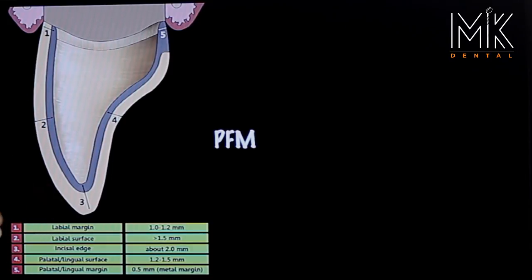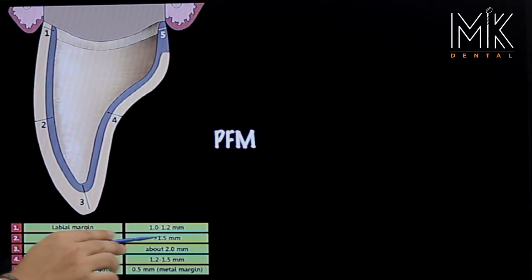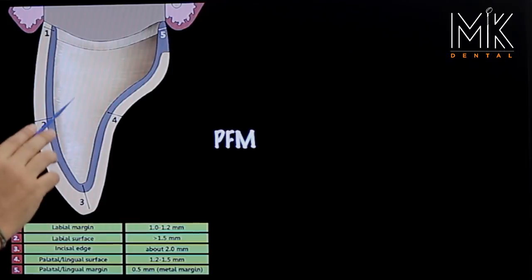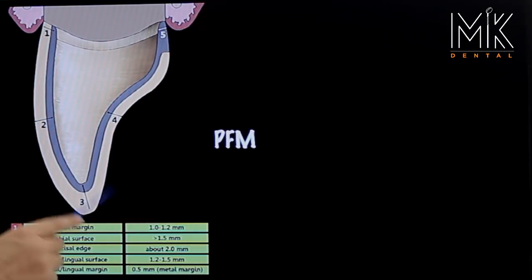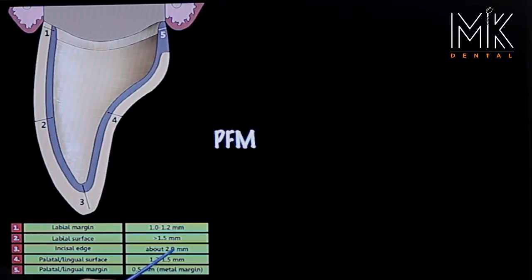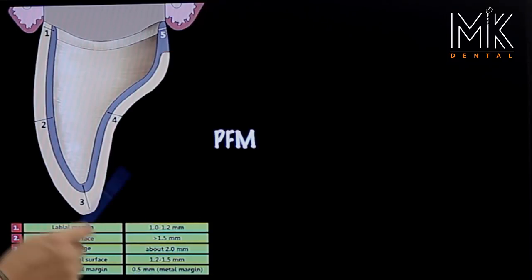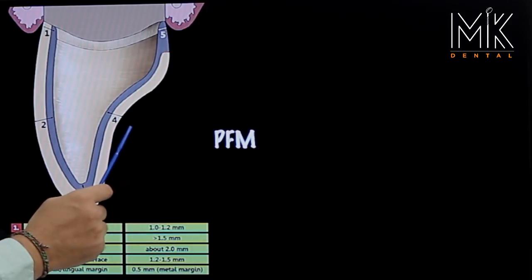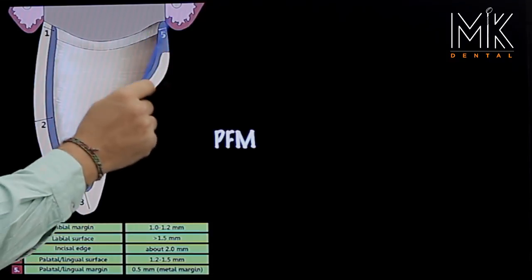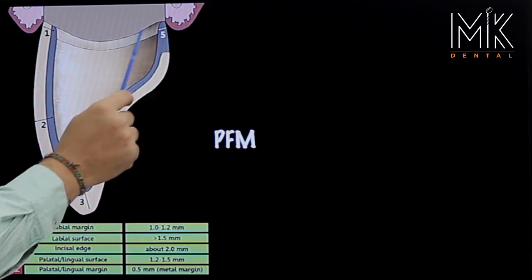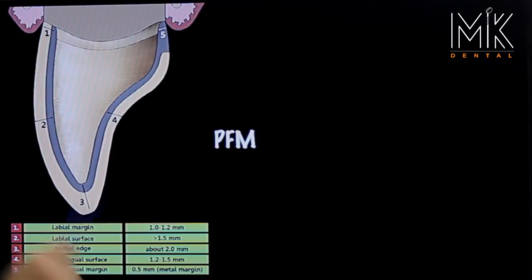On the labial face you need a little more than 1.5 millimeters — this is the aesthetic region. Maximum aesthetics comes from the incisal edge, where about 2 millimeters of reduction is needed. The reduction decreases towards the lingual or palatal margin, becoming the least toward the final margin area at about 0.5 millimeters.